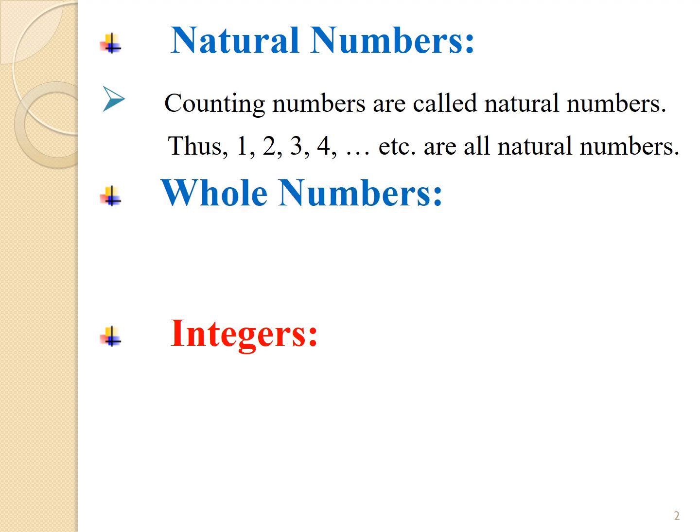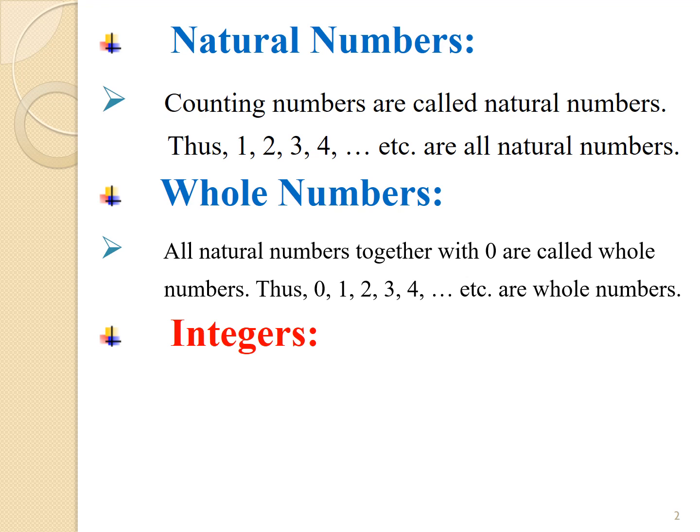Whole numbers. All natural numbers together with 0 are called whole numbers. Thus, 0, 1, 2, 3, 4, etc. are all whole numbers. We know that the result of subtraction of a smaller whole number from the greater whole number is a natural number. For example, 4 minus 1 equals 3. Similarly, the result of subtraction of a whole number from itself is 0, which is also a whole number. For example, 7 minus 7 equals 0.